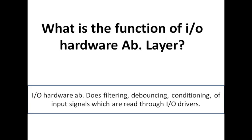What is the function of IO Hardware Abstraction Layer? The function of the IO Hardware Abstraction Layer is to filter, debounce, remove the debouncing effect, and perform signal conditioning of the input signals which are read through the IO drivers. Basically, you read some sensor signal which may consist of noise, so you need to go through filtering. If it is a kind of switch, then you need to remove the debouncing effect — all these are part of the IO Hardware Abstraction Layer.